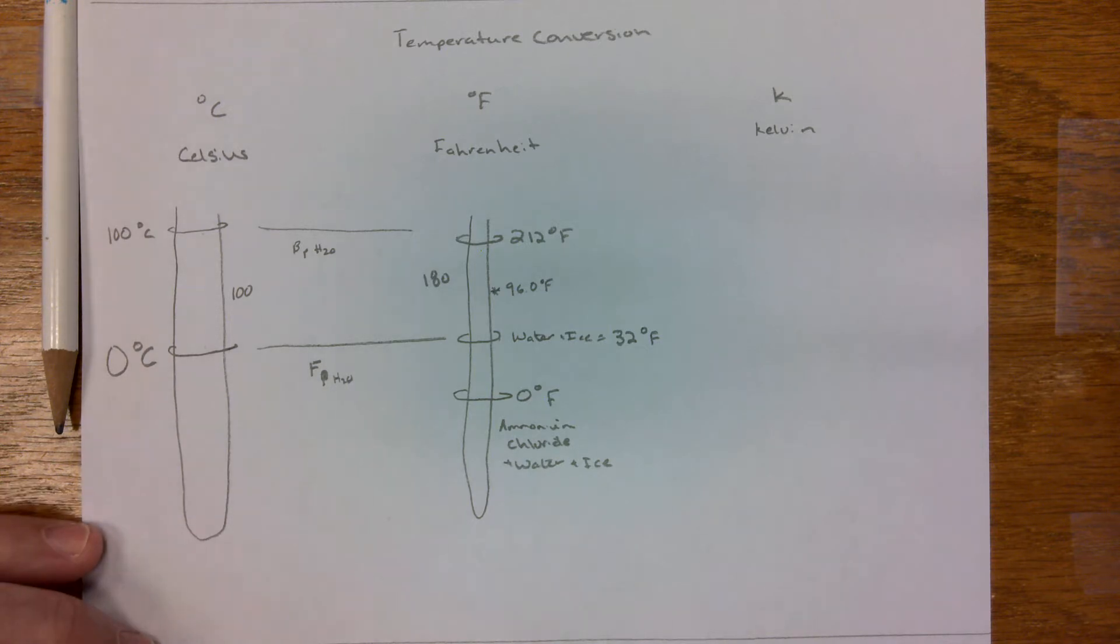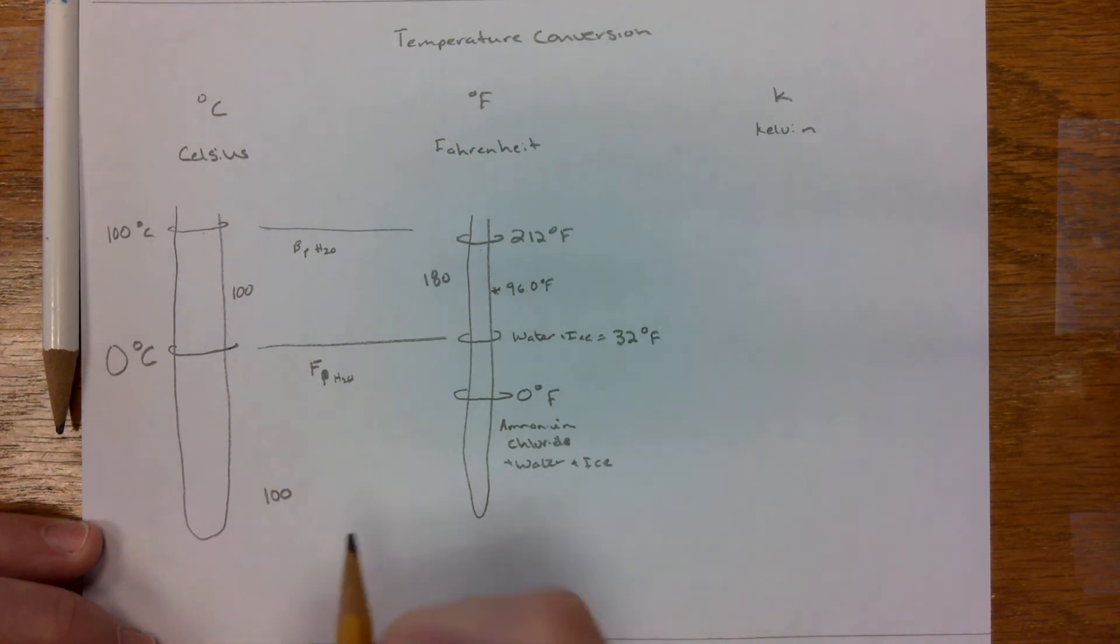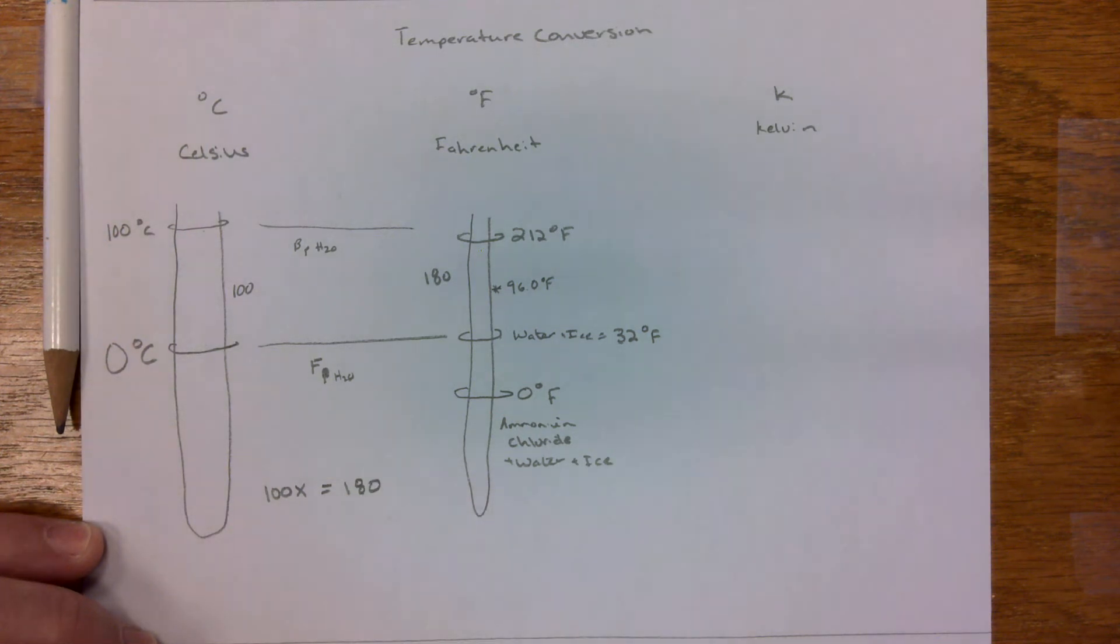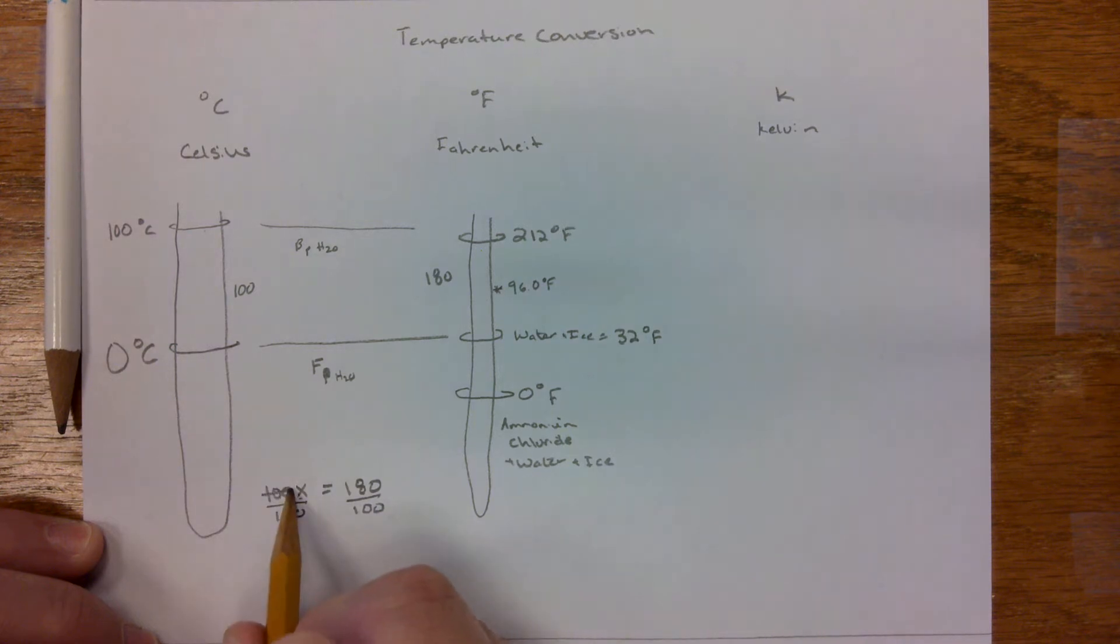I'm going to show you what we do. To find a conversion factor for a scale, we need to set one scale multiplied or divided by some number. Remember, you can multiply by a fraction to divide, to equal the other. So, to find out what X is, to find out what that conversion factor is, divide by 100 on both sides. Cancels here, so we have X is equal to 180 over 100. That will then reduce to 9 fifths. X is going to be equal to 9 fifths.